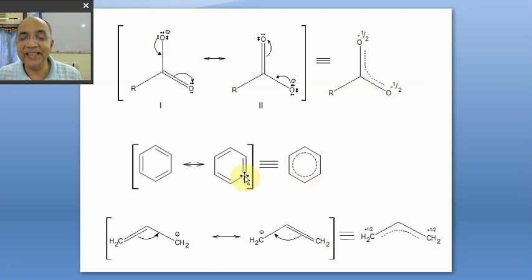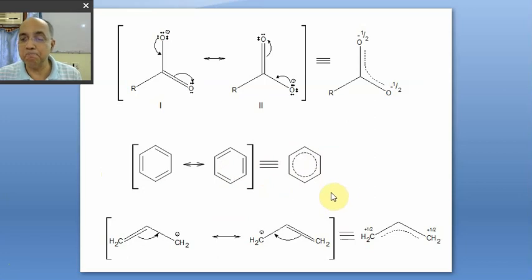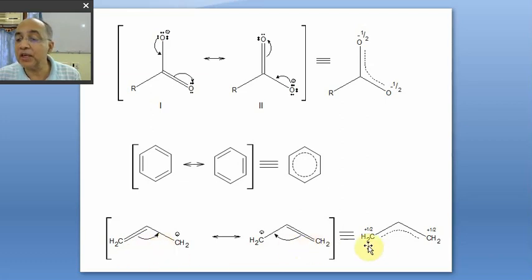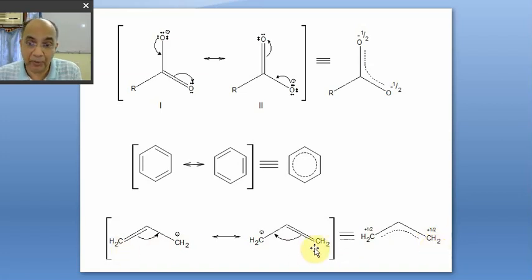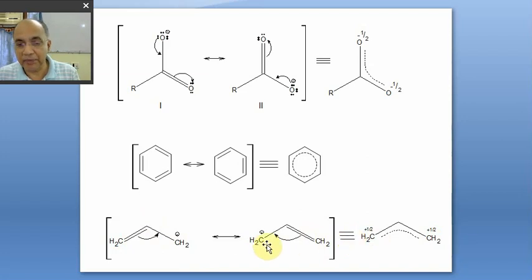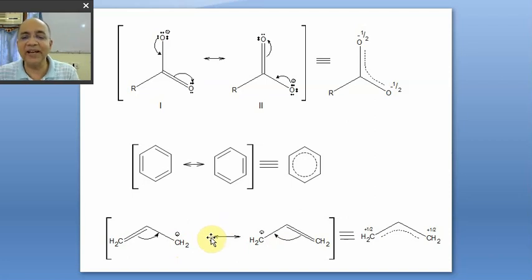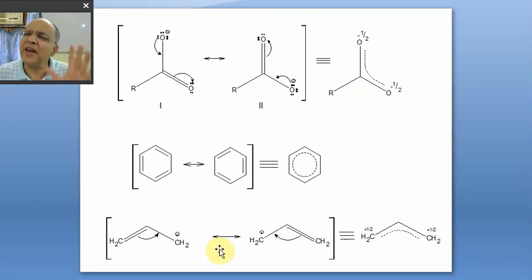In benzene, it is a hybrid of two Kekulé resonance structures, so the bond order is exactly 1.5. Similarly, allyl carbocation — the two RSS are equivalent, so you write plus half on each end. But if a methyl group is added, one becomes a secondary carbocation and the other a primary carbocation — they are no longer equivalent and do not contribute equally. This case of equivalent RSS is very rare.